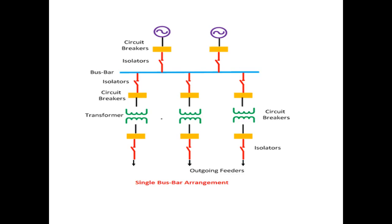Disadvantages of the single bus bar scheme: if the single bus bar fails, discontinuity will happen; it is difficult to perform maintenance; and the bus cannot be extended without completely de-energizing the substation. You cannot extend the bus bar without disconnecting supply. Despite these disadvantages, where economically justified, this bus bar scheme is considered.